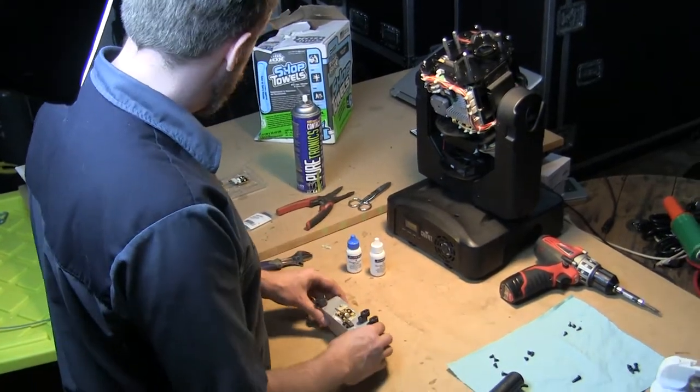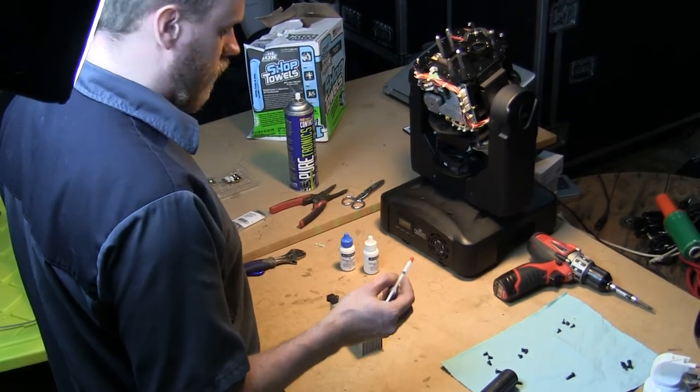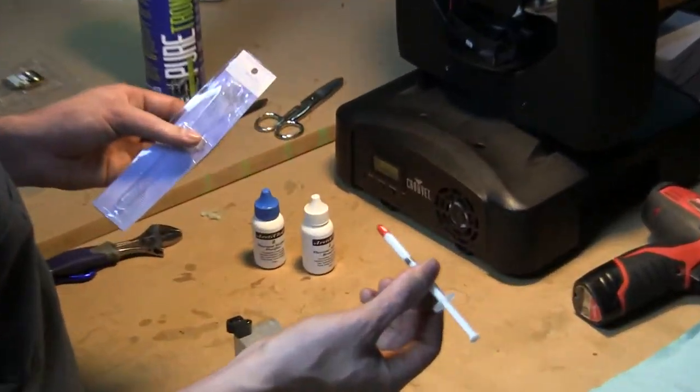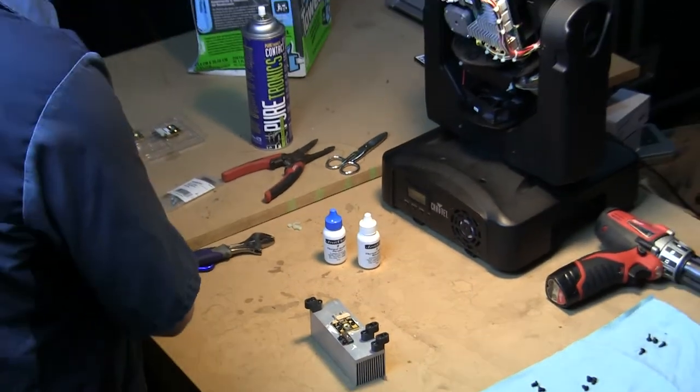Then you're also going to need to replace that thermal compound. Most of it comes in just a simple little syringe like this. They call it heat sink compound. It's the same stuff.